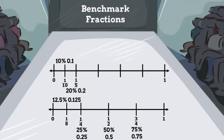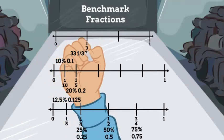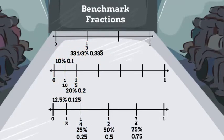The last benchmark fraction that we will look at is one third. Thirty-three times three is 99, so you would have to split that last penny up. That means that one third is 33 and a third percent or 0.3 forever. The bar over the three indicates that it keeps going.